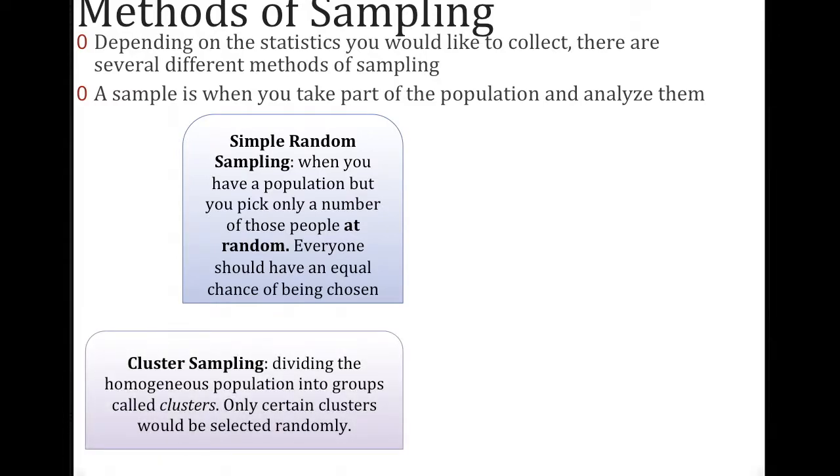Cluster sampling is when you divide a homogeneous population into groups called clusters, and only certain clusters would be selected randomly. So for example, I have a group of students, and I put them into clusters just randomly, I just randomly put them into groups. And of those groups, I only select a few of them. However, they are homogeneous because they are all students. And the question that I'm going to ask them is about student-like questions.